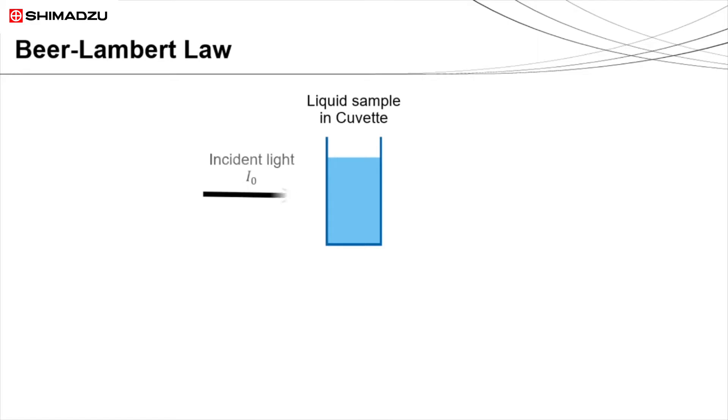When incident light passes through a sample, the sample in the cuvette absorbs the light. The amount of light that is not absorbed by the solution will come out as transmitted light. Transmittance is the ratio of the intensity of the incident light beam to the intensity of the transmitted light beam and is commonly expressed as a percentage. If there is no absorption of the light passing through the solution, the transmittance is 100%.